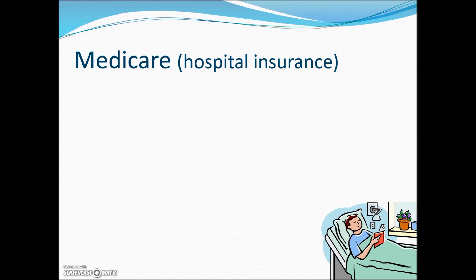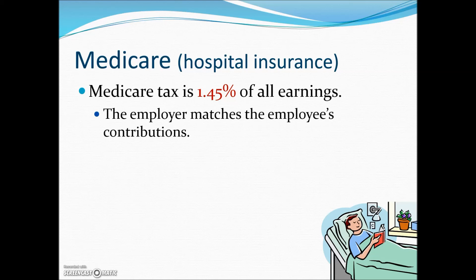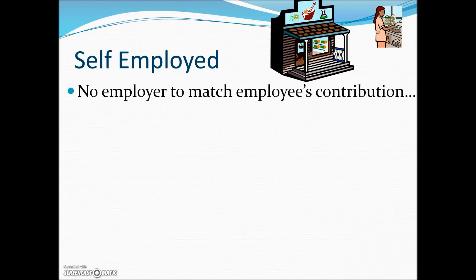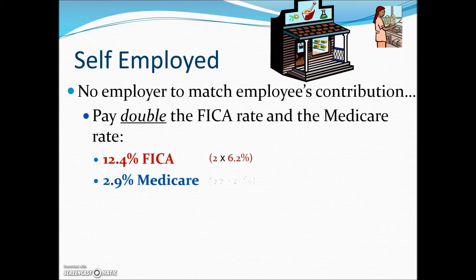Medicare is a tax paid on all earnings, with the total amount multiplied by 1.45%, and the employer matches this contribution. For a self-employed individual, there is no employer to match contributions, so they pay double the Social Security rate — 12.4% for FICA — and double the Medicare rate, which is 2.9%.